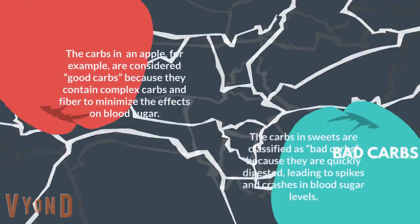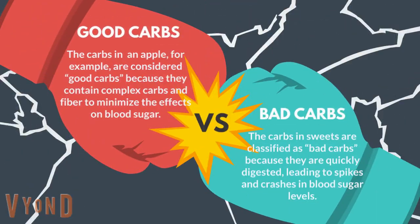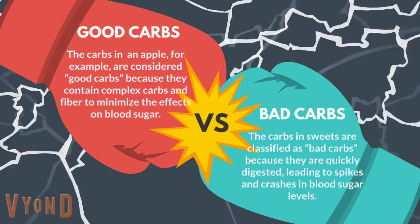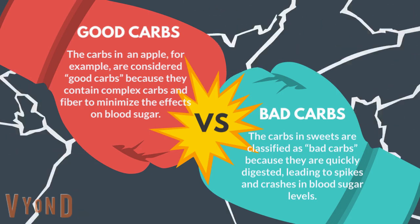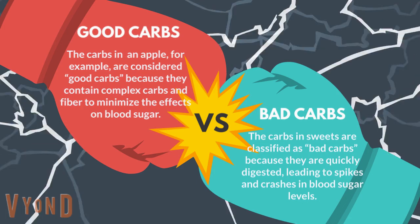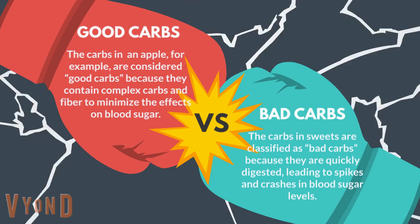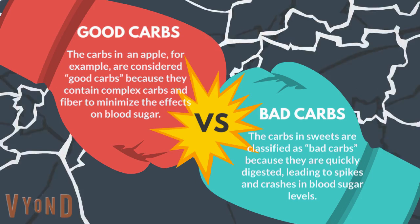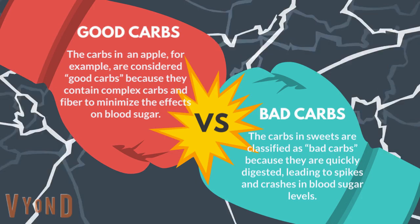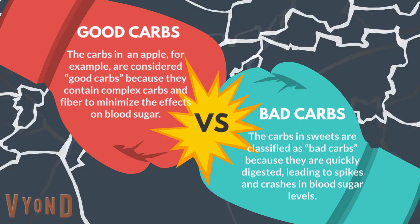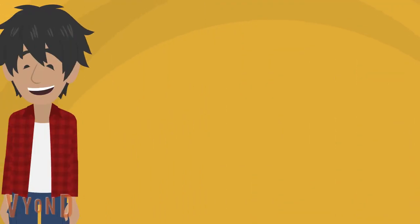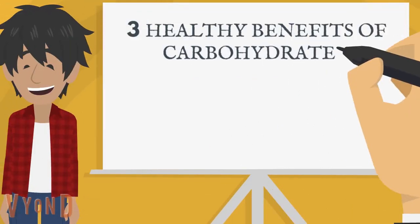Carbs are often categorized as good or bad. The carbs in an apple, for example, are considered good carbs because they contain complex carbs and fiber to minimize the effects on blood sugar. Conversely, the carbs in sweets are classified as bad carbs because they are quickly digested, leading to spikes and crashes in blood sugar levels.